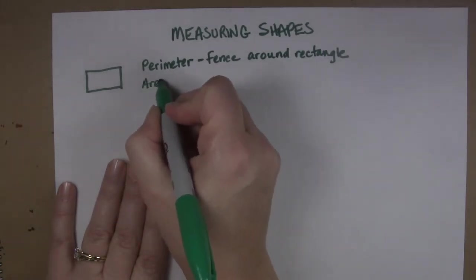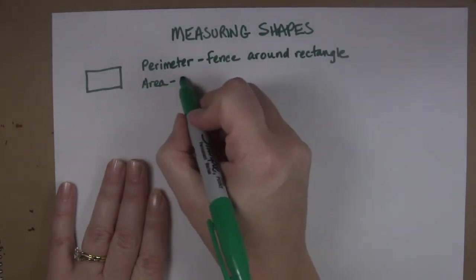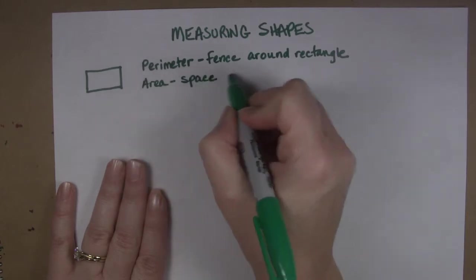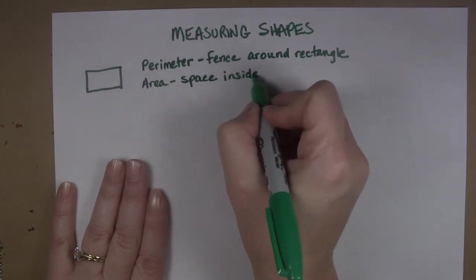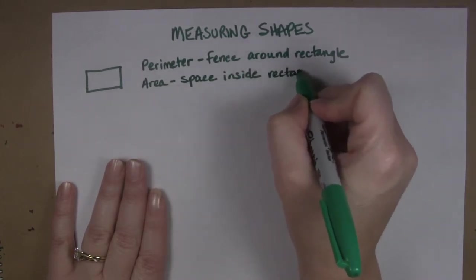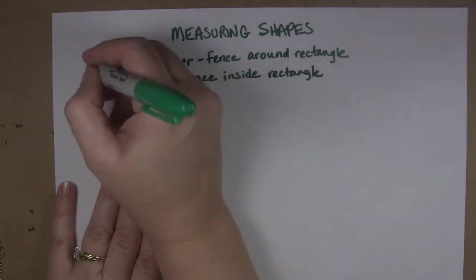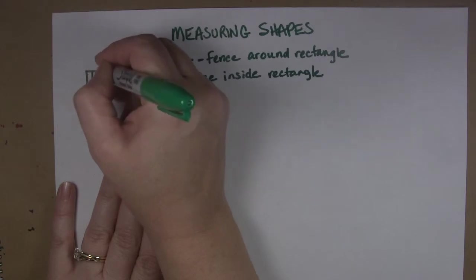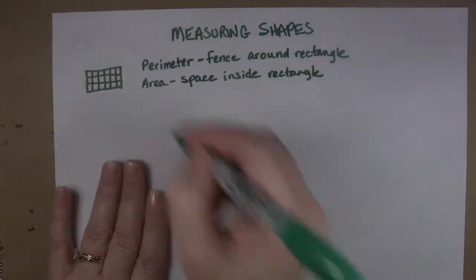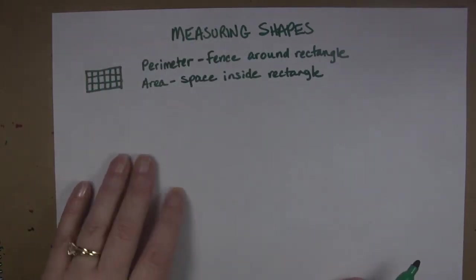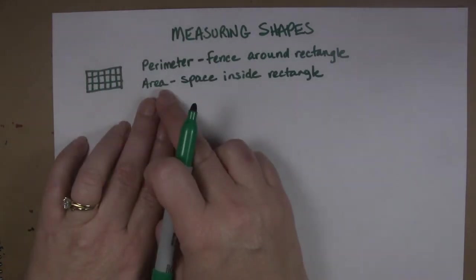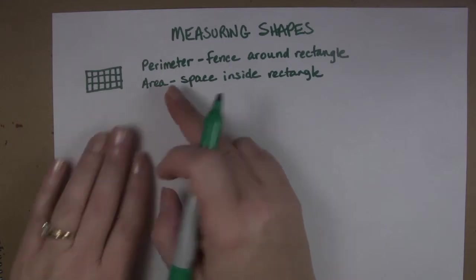The area is the space inside the rectangle. So what we would do is we would take our rectangle and we would divide it up into even little squares here and then we would count to see how many of those squares we had. That is what we're doing when we calculate the area of something.